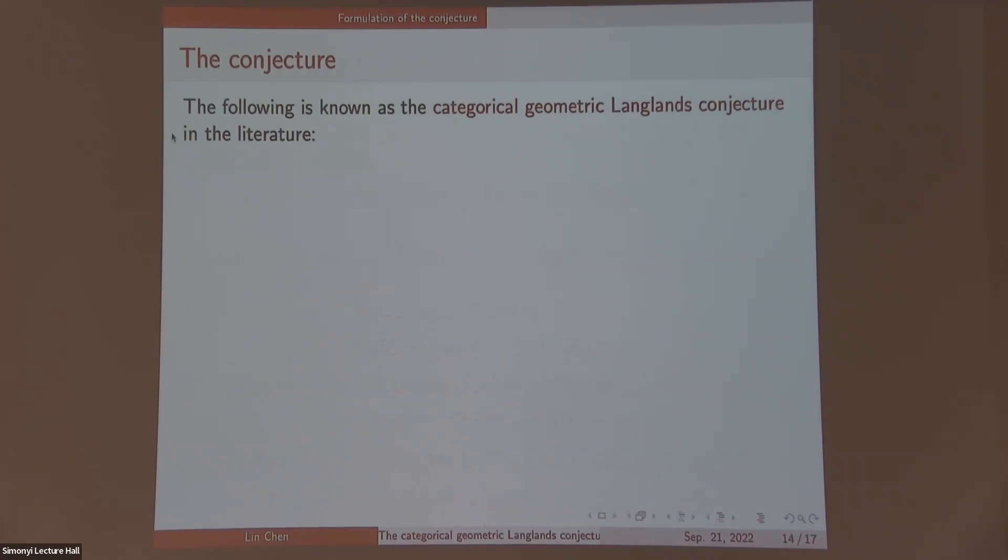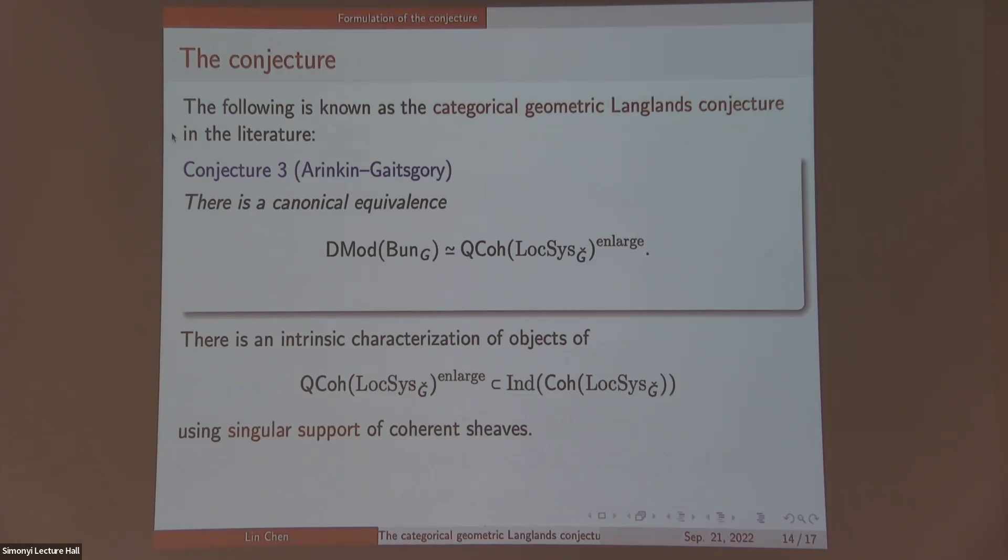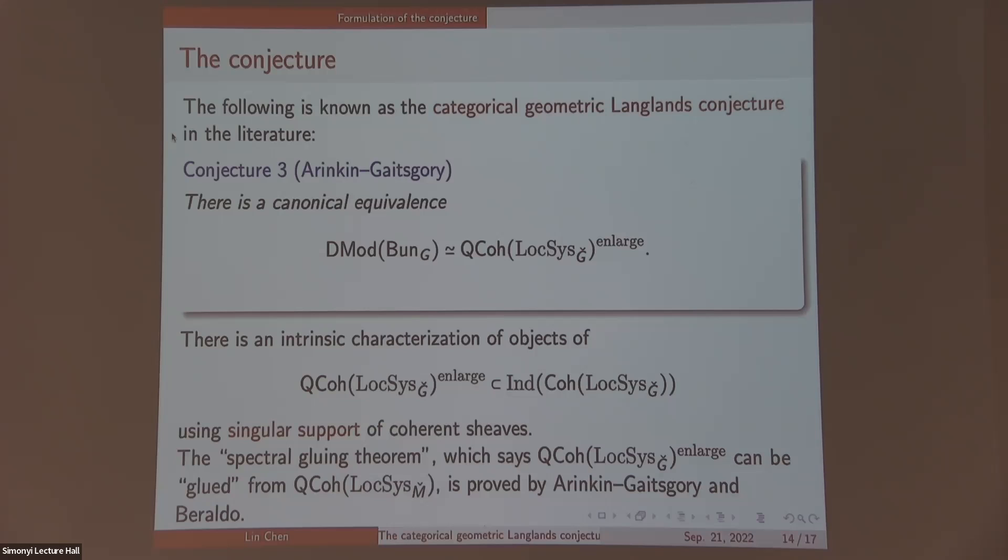And then you define this enlarged Qcoh by ind-completion, you obtain some category. And the conjecture, which is known in the literature as categorical geometric Langlands conjecture due to Arinkin-Gaitsgory, says that there's a categorical equivalence from D-mod Bun_G to this enlarged Qcoh. They also prove the spectral Borel-Weil theorem, which is a complete analog of the automorphic Borel-Weil theorem I mentioned before. It says that this enlarged Qcoh can be glued from all these Qcoh Loc_SM-check in some standard way.